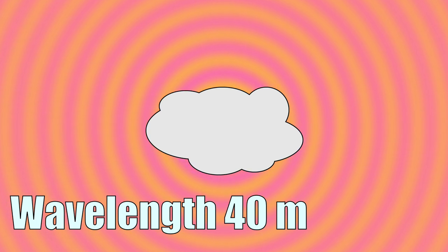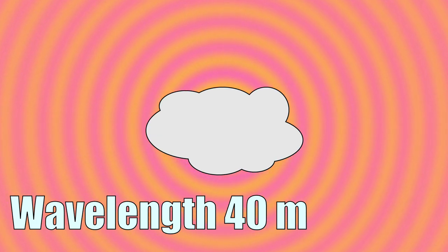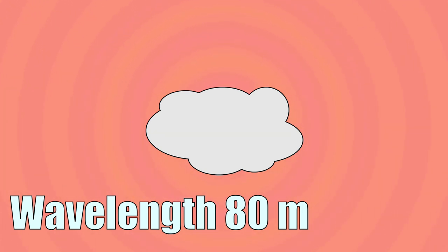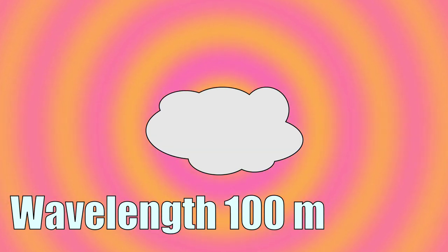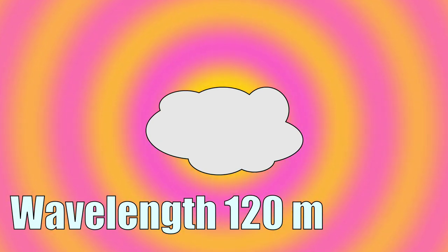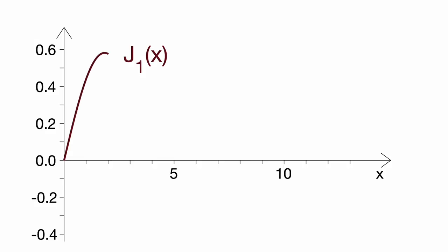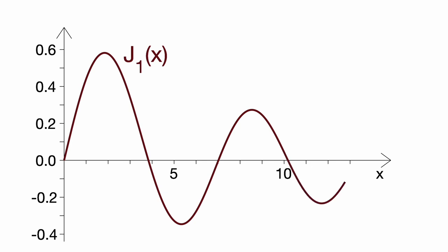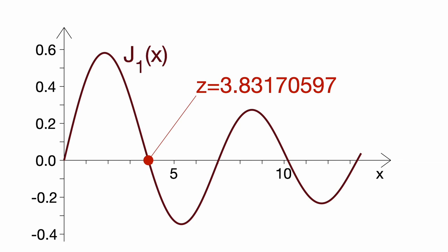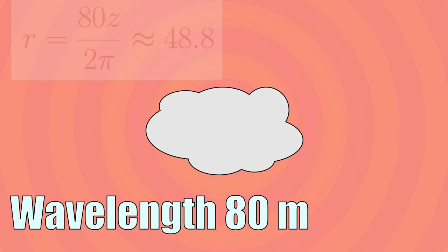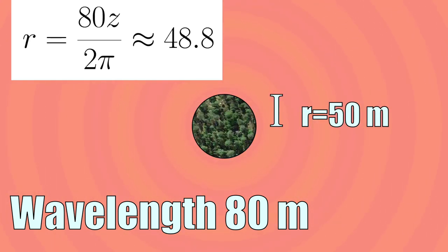We start from low wind speed and short wavelength, then increase them gradually up to storm levels. At a certain wavelength — here 80 meters — there is almost no J0 scattering at all. That's the magic wavelength that tells us the radius of the island. Mathematical theory of scattering gives us a formula where Z is the location of a zero value of the Bessel function J1 — a relative of the sine and cosine functions invented in the 1820s. We observed that wavelength 80 gives almost no J0 scattering, so we get the radius R equal to Z times 80 over 2π, which is 48.8 meters — very close to the true value of 50 meters.